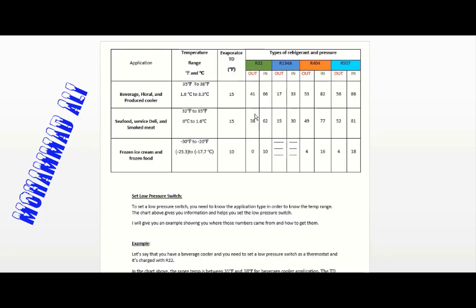I'll show you how to get those numbers for any type of refrigerant. You just need to know the type of application, the temperature range, and the TD — those stay the same. The pressures may change according to the type of refrigerant. In our example, we want to cool beverages at 35°F to 38°F with R22, and we'll find the cut-out pressure.